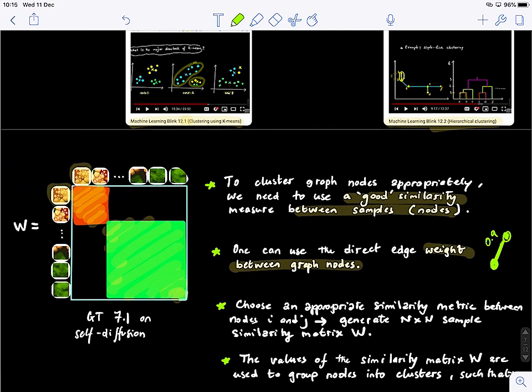Or alternatively, you can define an appropriate similarity metric or a matrix. So you define your own similarity between the nodes in the graph. And this is what we have done before. We started from the W, the direct edge weight matrix for graph self-diffusion.